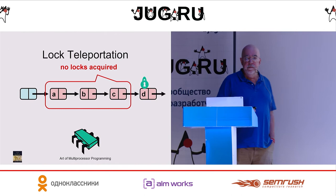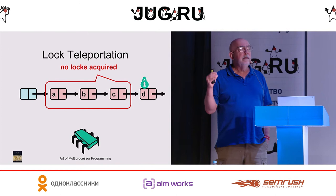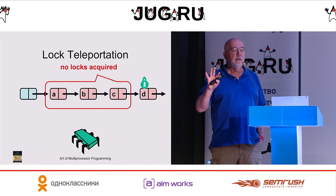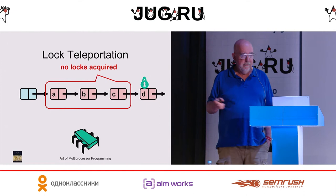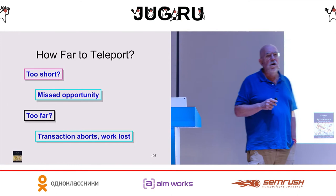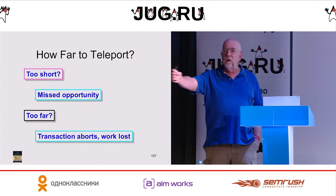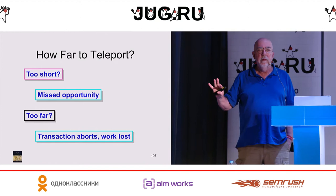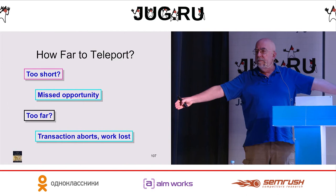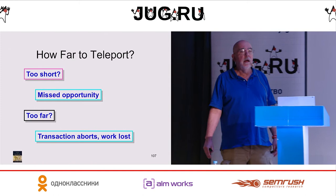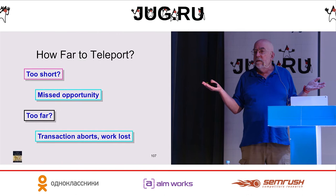No intermediate locks are required. The place where this pays off in a bigger way is not so much with locks as it is with free storage management — if you don't have garbage collection and want to use hazard pointers, this is a way of eliminating hazard pointers. An interesting question is how far should I teleport. Remember that this is dangerous because if I overflow my cache, then my transaction will abort. If I don't go far enough, it's inefficient. If I go too far, my transaction will abort. If I have a shared cache with another thread, it might be difficult to predict how much cache space I have.